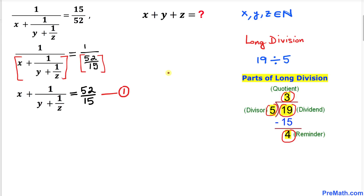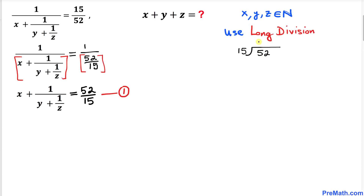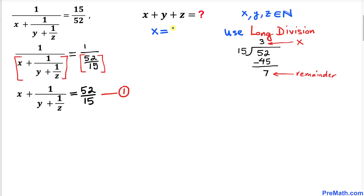Now we are going to write 52 divided by 15 using the long division algorithm, where 15 is our divisor and 52 is our dividend. Performing the division: 15 times 3 is 45, subtract to get remainder 7. So the quotient 3 is our x value and the remainder is 7. Therefore our x value is 3.